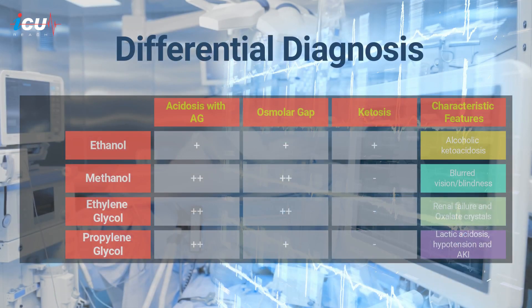The differential diagnosis of a high anion gap and a large osmolar gap includes ethanol intoxication, methanol ingestion, ethylene glycol ingestion, and propylene glycol infusion.